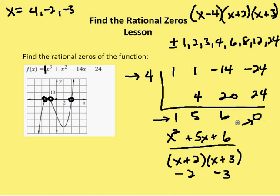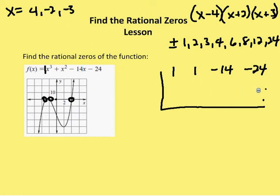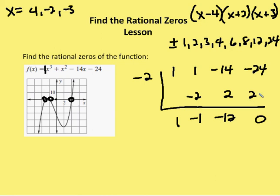Let's go back in and do the synthetic division process again using negative two. We'll use negative two. One plus zero is one. Negative two times one is negative two. One plus negative two is negative one. Negative two times negative one is two. Negative fourteen plus two is negative twelve. Negative two times negative twelve is twenty-four. Negative twenty-four plus twenty-four is zero. And I'm left with my quadratic x squared minus x minus twelve.